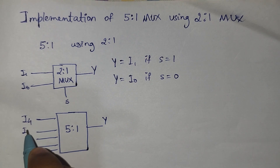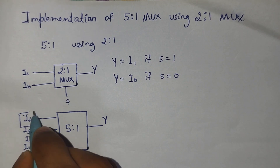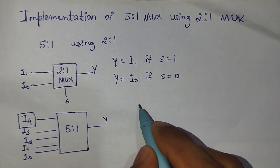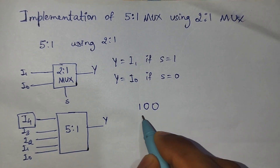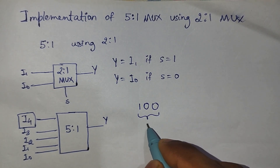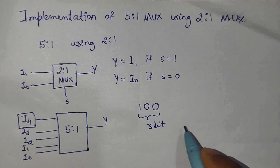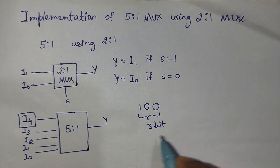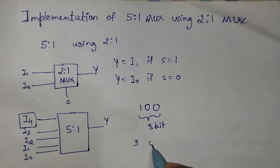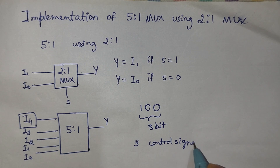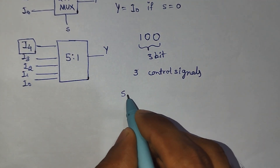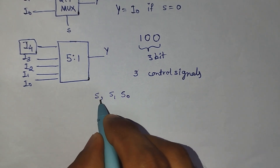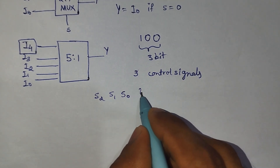We can write the inputs as i4, i3, i2, i1, i0. The fifth input can be represented as binary 1 0 0, meaning we need 3 bits to select a particular input. So we need 3 control signals: s0, s1, and s2.